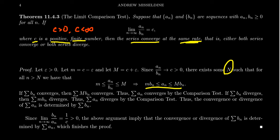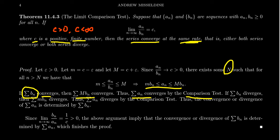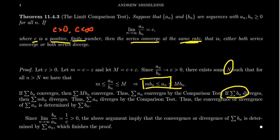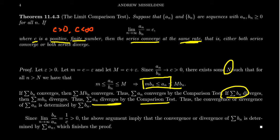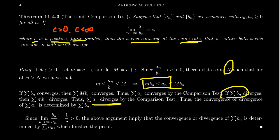Using this limit statement — that a over b converges to c — that convergence translates into an inequality, and this inequality is where we apply the comparison test. If the series of b_n's is convergent, then any constant multiple of that series is still convergent, so the sum of capital M times b_n is convergent. Because a_n is smaller than that, and these are positive series, the comparison test tells us the series of a_n's is also convergent. Conversely, if b_n is divergent, then any multiple of b_n is also divergent, and since a_n is bigger than that divergent series, a_n must likewise be divergent by the comparison test.